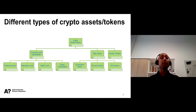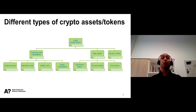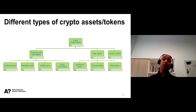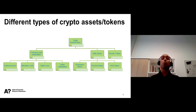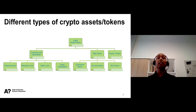Some notable examples of altcoins are Litecoin, Namecoin, and Dockcoin. Stablecoins are another type of cryptocurrency that attempt to peg their market value to a fiat currency or commodities such as gold or silver.